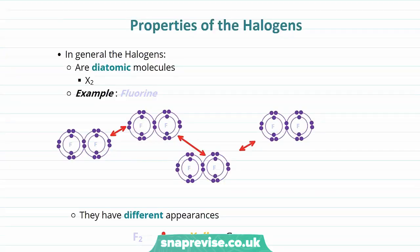Let's have a look at the properties of the halogens. In general, the halogens exist as diatomic molecules — two atoms covalently bonded together — giving them the general formula X₂, where X represents any of our halogens. For example, two fluorine atoms covalently bonded together form a fluorine molecule, a diatomic molecule.